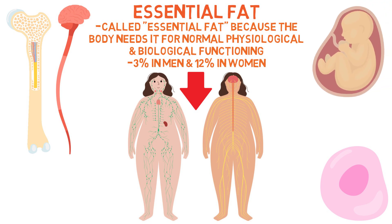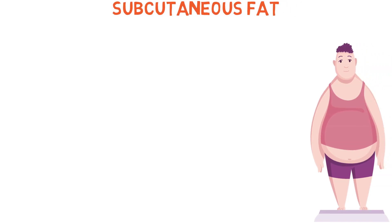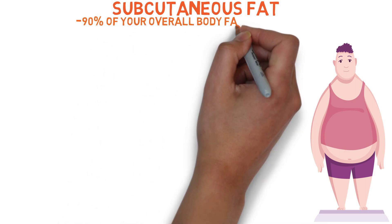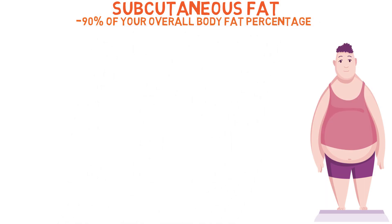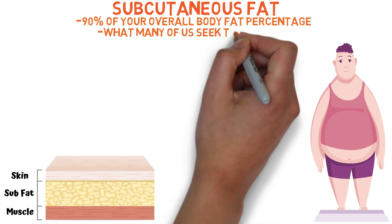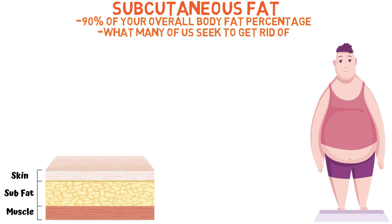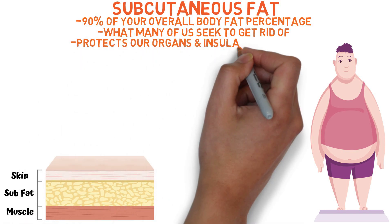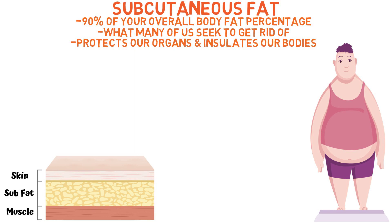Subcutaneous fat tissue is the apparent type of fat found in almost every part of the body, such as the hips, thighs, legs, arms, and stomach. It makes up around 90% of your overall body fat percentage and is located on the outer layer of the body, just underneath the skin. Since it's the most visible, it's what we think of when we think about fat. However, it does serve a purpose — protecting our organs and insulating our bodies to help maintain temperature.